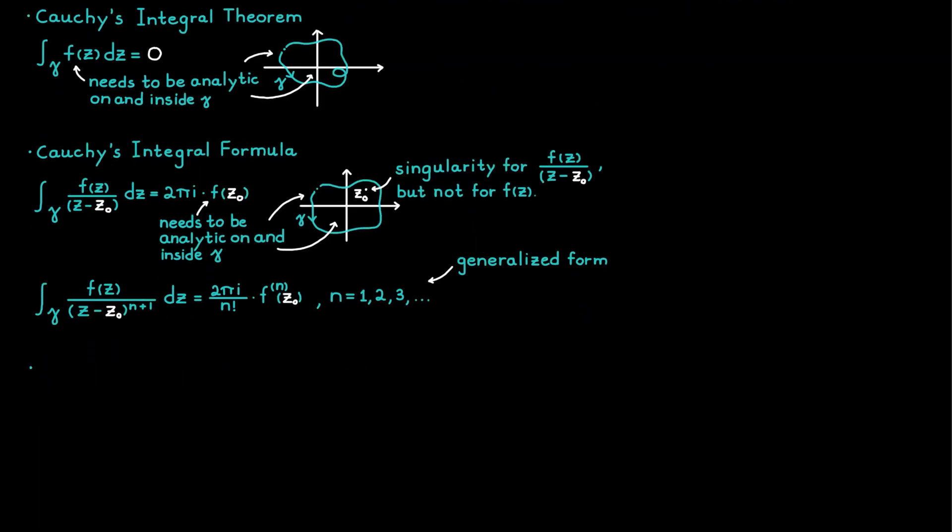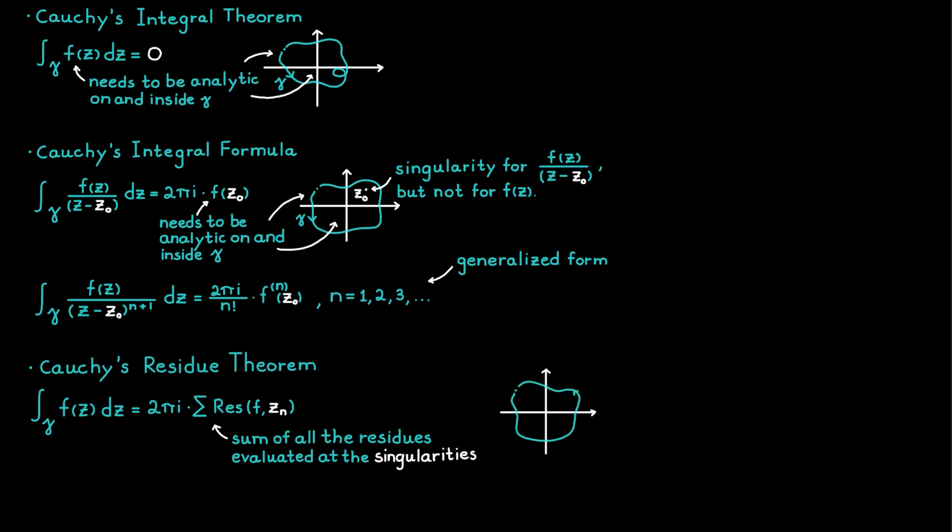The last method is called Cauchy's residue theorem and this method is able to handle any number of singularities inside of the contour gamma and is therefore in most cases the one method to choose when dealing with singularities. It works by taking the sum of all the residues evaluated at the singularities and the only requirement for this to work is that the function f needs to be analytic on and inside of gamma, except at the singularities of course.